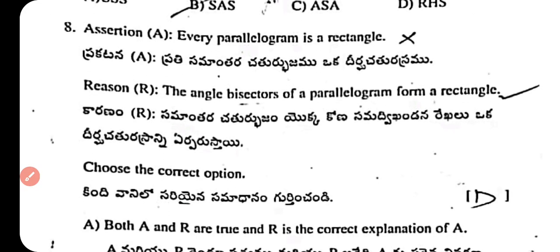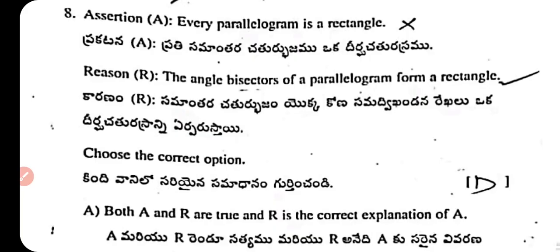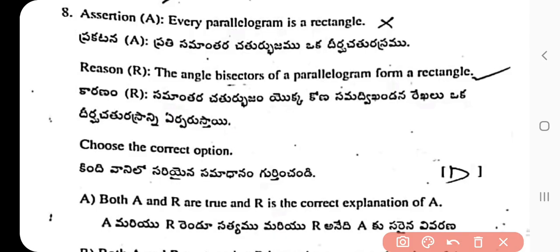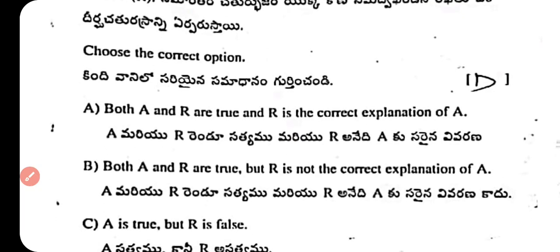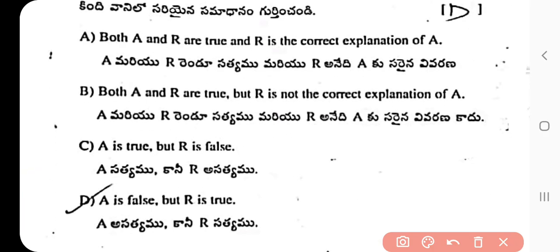Question 8: Assertion — every parallelogram is a rectangle. Reason — the angle bisectors of a parallelogram form a rectangle. The right answer is option D: assertion is false but reason is true. The assertion is false because not all parallelograms are rectangles — only those with 90-degree angles. The reason is true: angle bisectors of a parallelogram always enclose a rectangle.